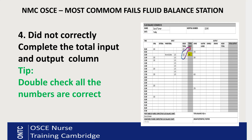The fourth common fail is not correctly working out the total input and output column. That column is a running cumulative total. For example, for the 10 o'clock box in total input, you put the hourly total for 10 o'clock plus the previous running total. So if at 8 o'clock the running total was 220, nothing at 9 o'clock, and 125ml at 10 o'clock, then the total input box for 10 o'clock is 345ml.